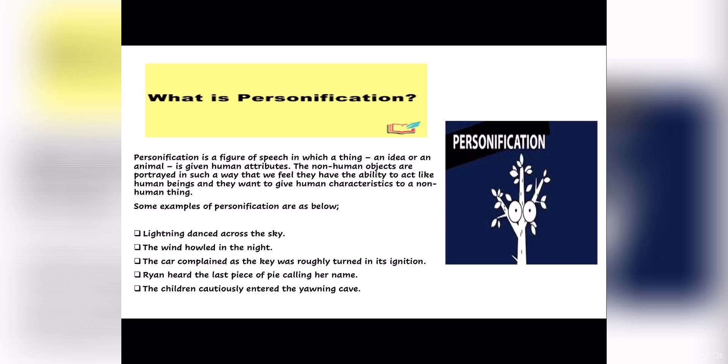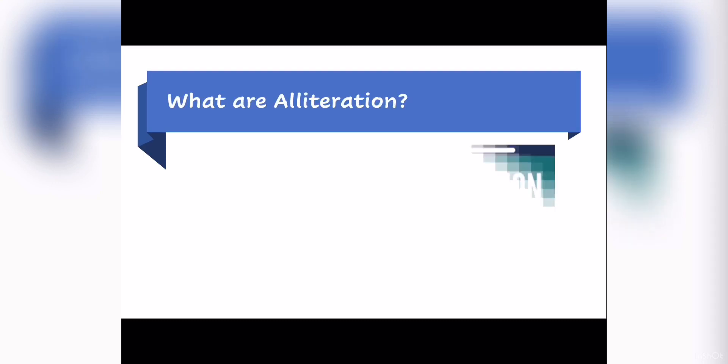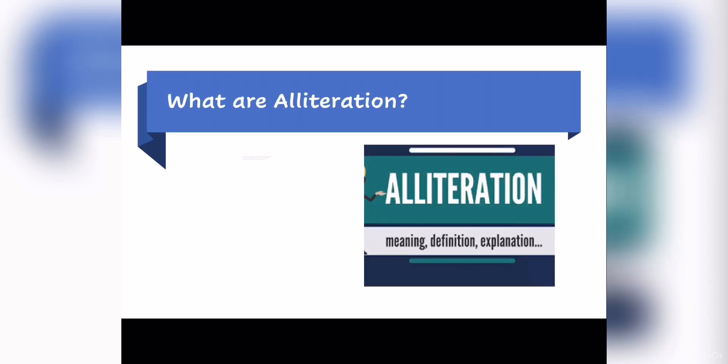Now let's move on to alliteration. What is alliteration? Alliteration is a term to describe a literary device in which a series of words begin with the same consonant sound.